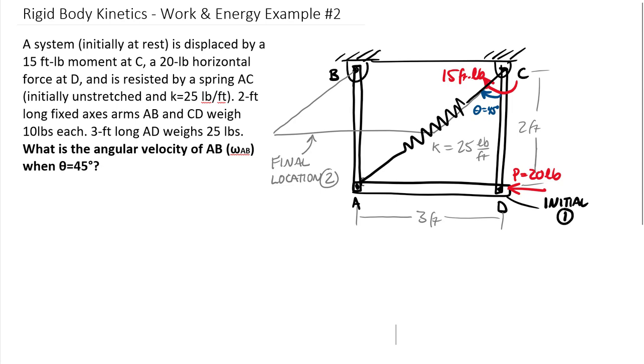We have a spring that runs here attached to point A, attached to point C. It has a spring constant of 25 pounds per foot and it is unstretched initially, so you don't have to worry about the initial spring energy, but it will have a final spring energy. This problem has a lot of parts.